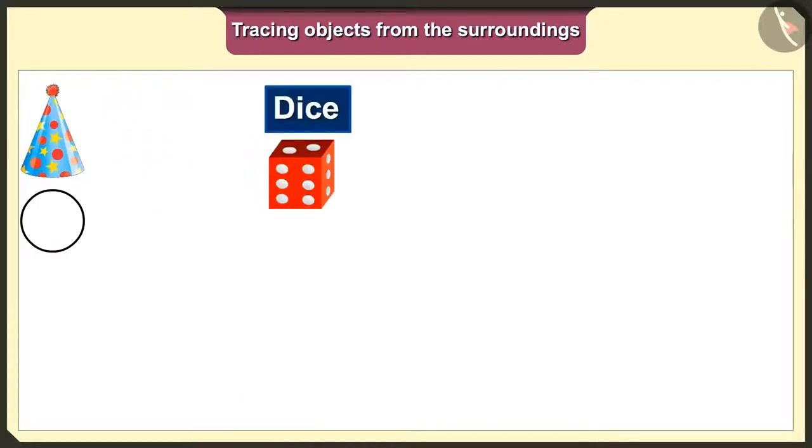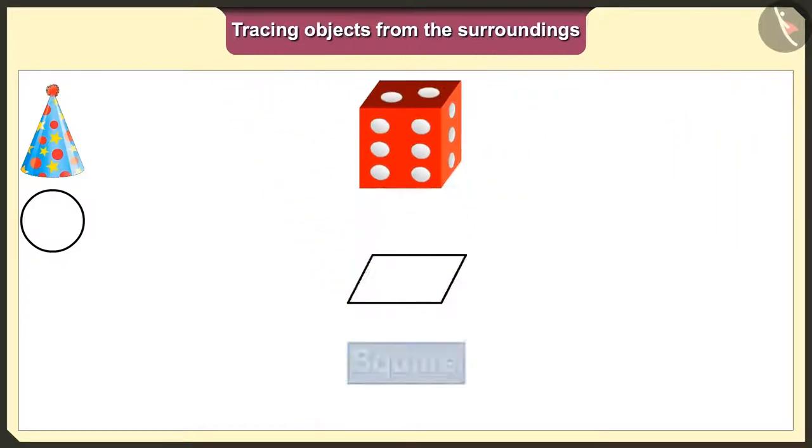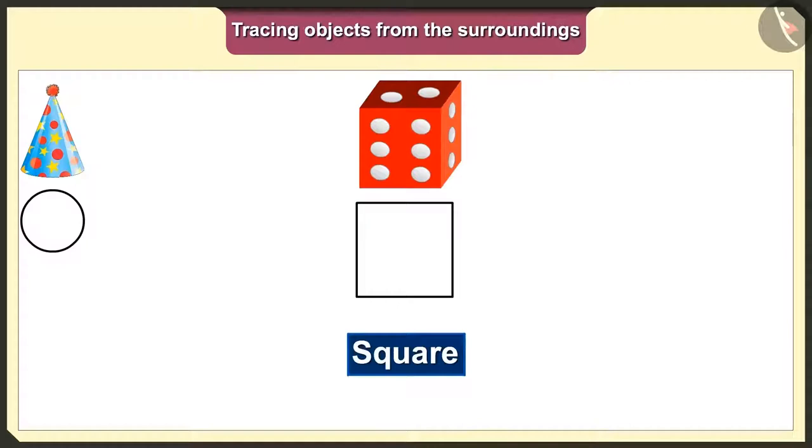Now, we will trace the dice. Here, this dice's base is a square. So, we will get square shape when we put it on paper and trace it.